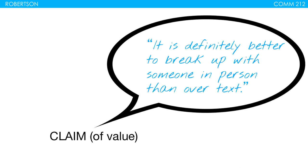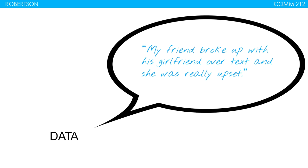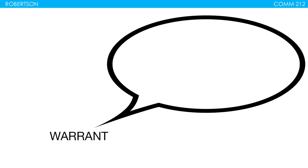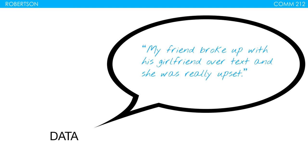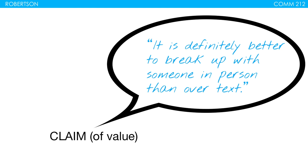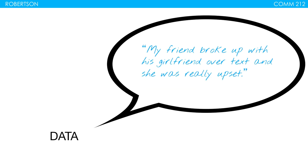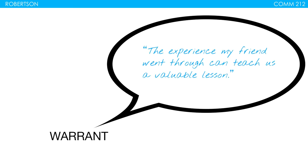Example number two is a claim of value: 'It's definitely better to break up with someone in person than over text.' The data: my friend broke up with his girlfriend over text and she was really upset — a single person giving lay testimony, which is often how arguments show up. The warrant is that the experience my friend went through can teach us a valuable lesson. So is that data enough for you to support that claim? Maybe, maybe not — it depends on the person and what you think about this.